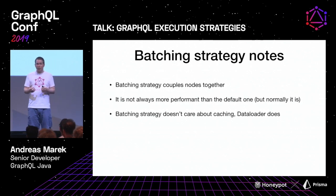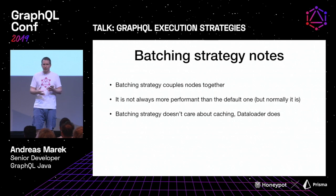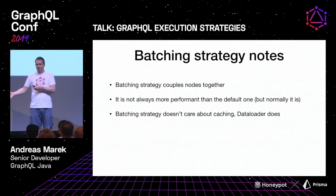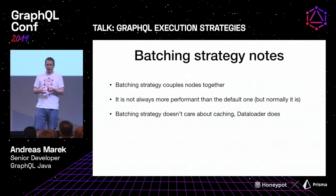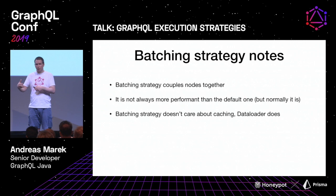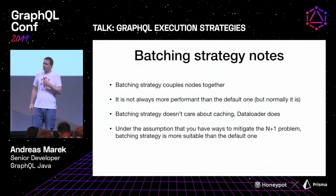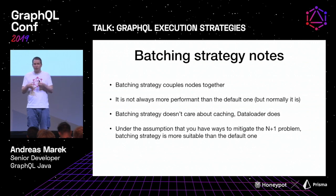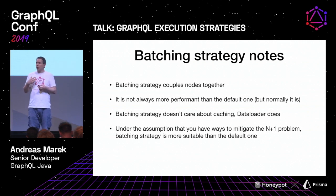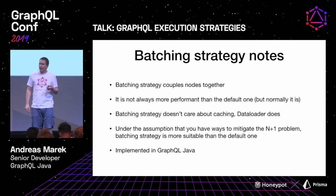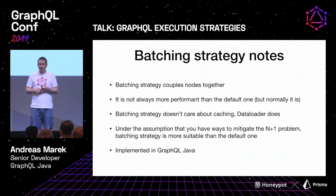Also worth noting: Data Loader does two things — it gives you batching and caching. The batching strategy as described here has nothing to do with caching; you'd need to handle that separately. Under the assumption that you have ways to deal with the n+1 problem in your domain, the batching strategy is probably the more suitable version. It's implemented in GraphQL Java — we actually have two versions for historical reasons — but as far as I know it's not implemented in other languages. If someone wants to give it a shot in GraphQL JS, feel free.